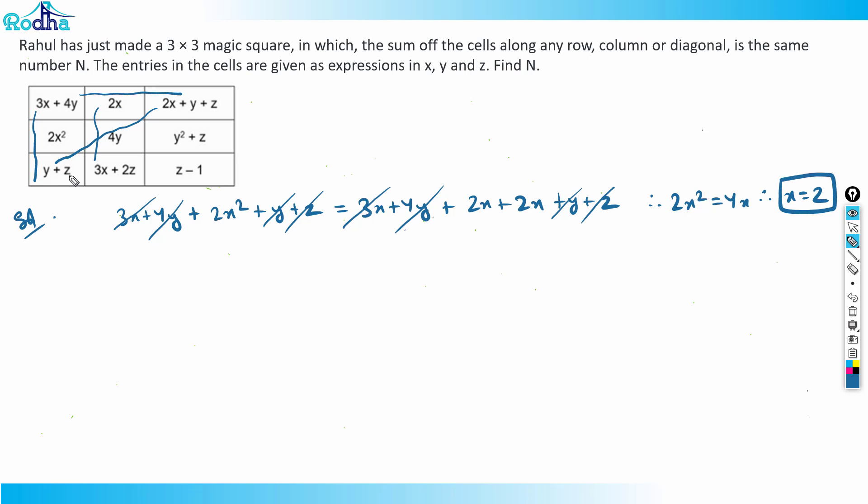You can see that if I equate this to this diagonal. If the sum of this column, in this column we have got 2z. If we look at this diagonal here, in this diagonal also sum is 2z. z plus z is 2z. So z will get cancelled. That's beneficial for me. So let's apply this.